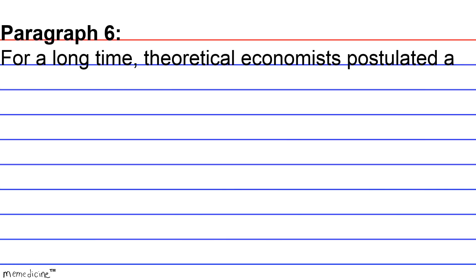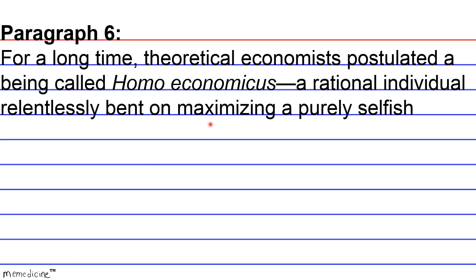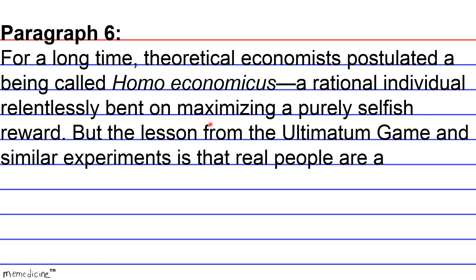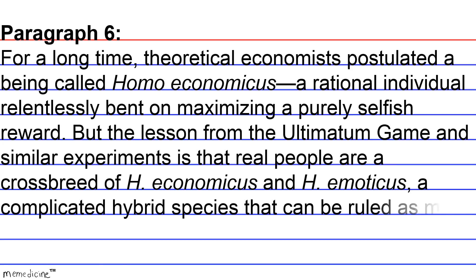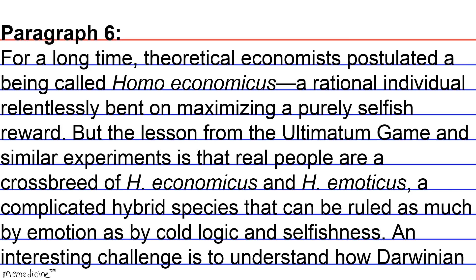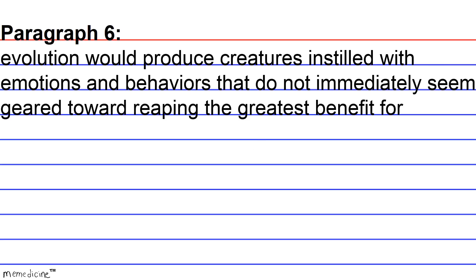Paragraph 6. For a long time, theoretical economists postulated a being called homo economicus — a rational individual relentlessly bent on maximizing a purely selfish reward. But the lesson from the ultimatum game and similar experiments is that real people are a crossbreed of homo economicus and homo emoticus, a complicated hybrid species that can be ruled as much by emotion as by cold logic and selfishness. An interesting challenge is to understand how Darwinian evolution would produce creatures instilled with emotions and behaviors that do not immediately seem geared toward reaping the greatest benefit for individuals or their genes.